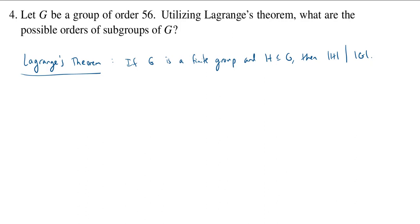So in our case, the order of G is equal to 56. And so if we're going to have a subgroup, it's going to have to have an order that divides 56. So the possible subgroup orders are, well, of course, there's one. And we even know such a subgroup exists.